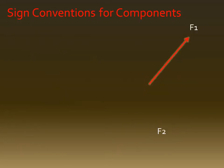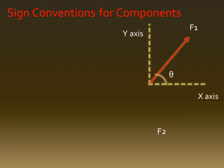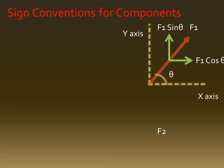Sign conventions for components: suppose force F1 acts in the upward direction at an angle theta with the horizontal axis. F1 is resolved into two components — the horizontal component F1 cos θ and the vertical component F1 sin θ.